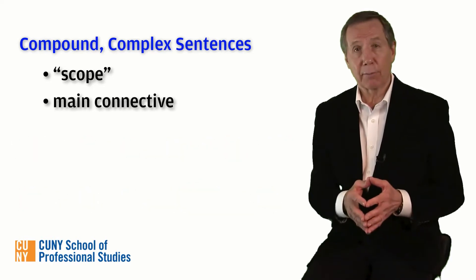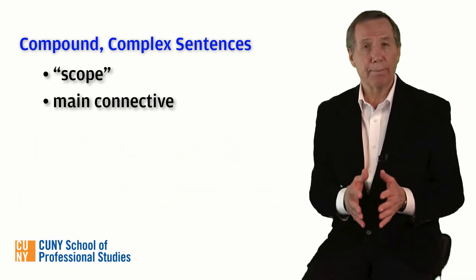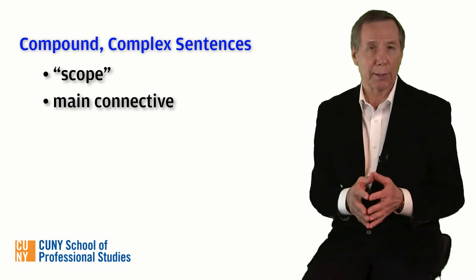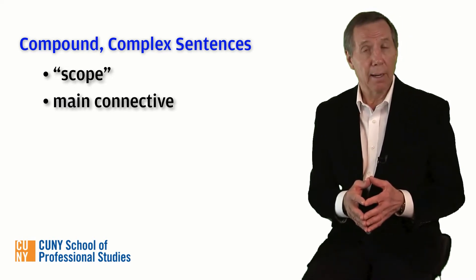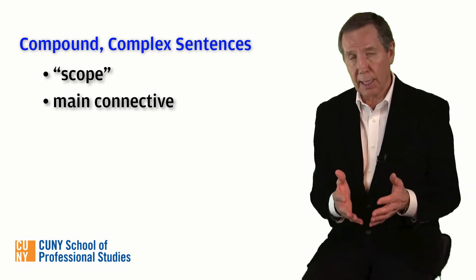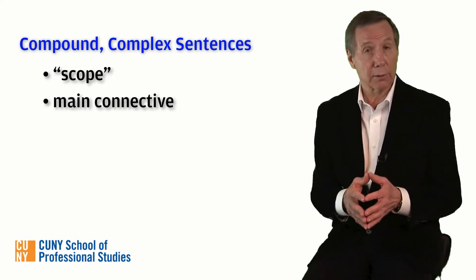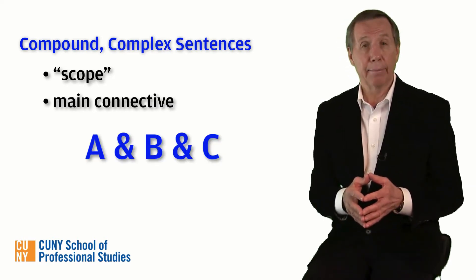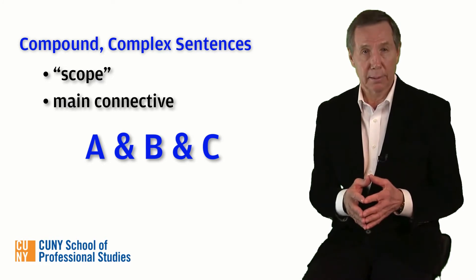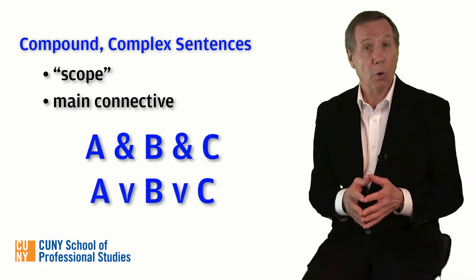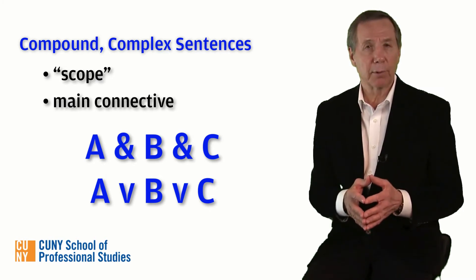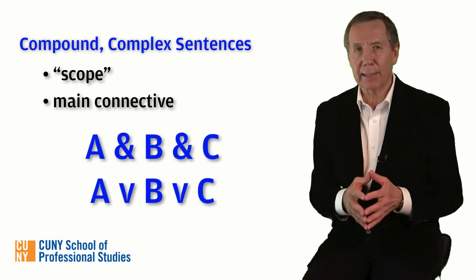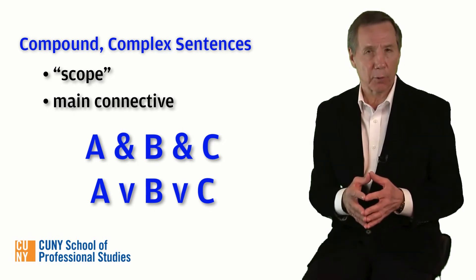Third, as a matter of convention, we can omit parentheses when we join or disjoin three or more atomic sentences, provided they are not part of a larger compound sentence — for example, 'A and B and C' or 'A or B or C.' We don't need parentheses here since the expressions simply aggregate identical connectives that are either conjunctive or disjunctive.